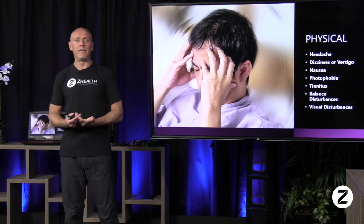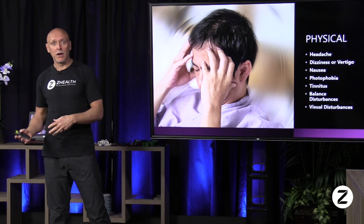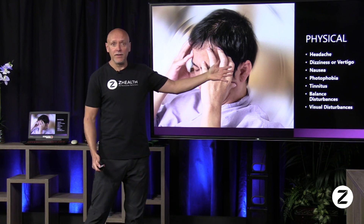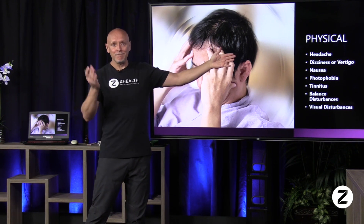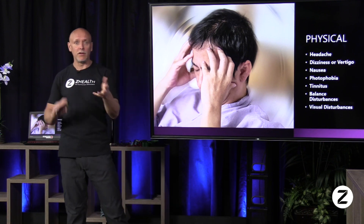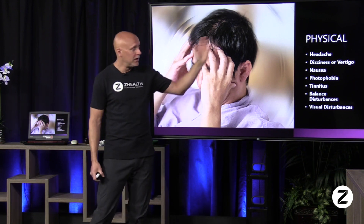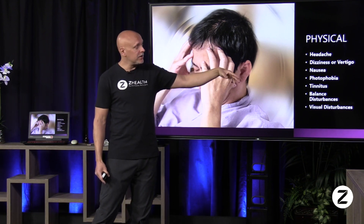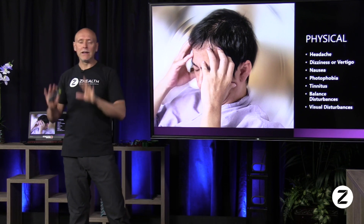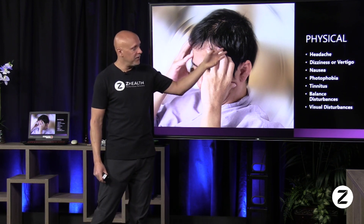The physical domain is what those of you in the movement professions will hear the most about — this is what people will complain about, which is why we have to take a good history. The physical domain is very well known: headache, migraine — both kind of go hand in hand — dizziness or vertigo, which are different things but represent some type of instability as they move through the world. Nausea, usually connected with the dizziness or vertigo. Photophobia — very light sensitive — is a common issue you'll see in people with PCS.